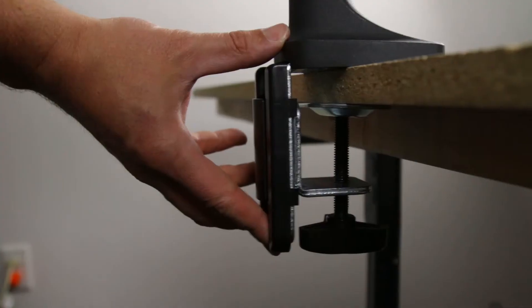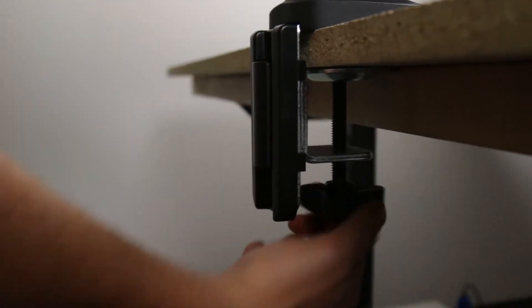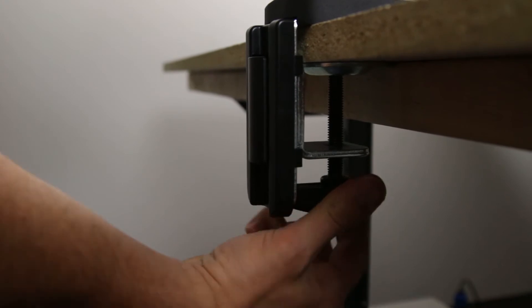Mount the arm to the table by sliding the base in between the table and the clamp. Tighten the clamp to secure the arm base to the table.